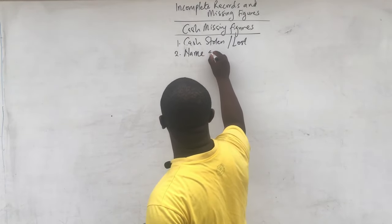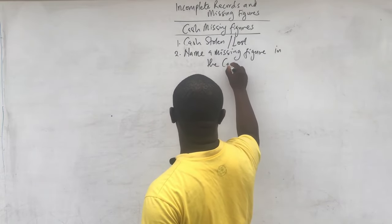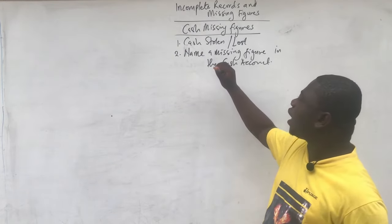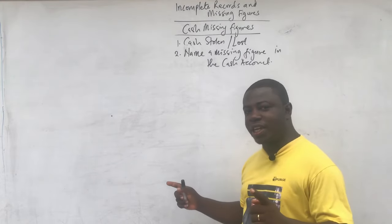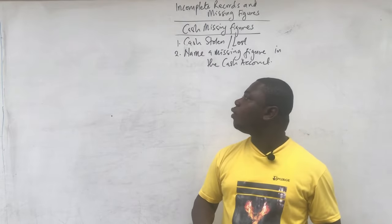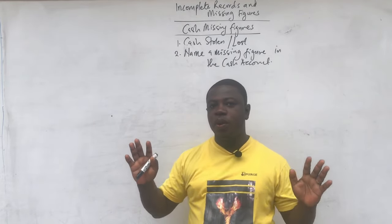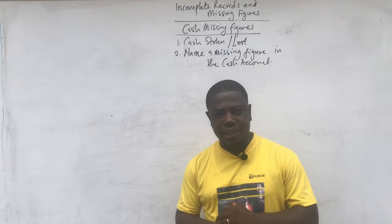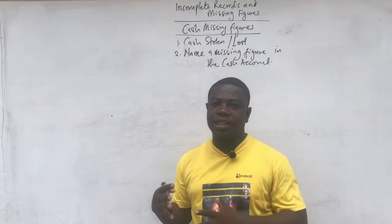The next possible requirement is to name a missing figure in the cash account or the cash book. These are the two things we are going to look at concerning missing figures with cash - finding cash stolen or lost, or preparing a cash book or cash account where you may need to name a missing figure either on the debit side or on the credit side. I am going to solve a very complex question after this lesson which will involve the cash lost or stolen.